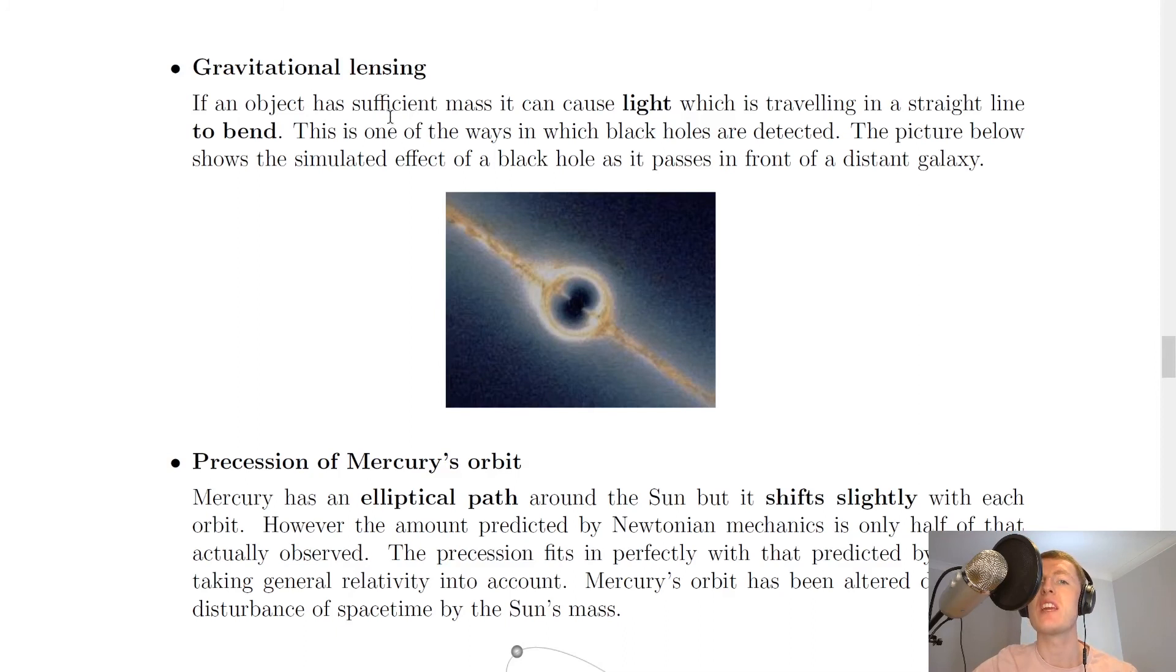The next one is gravitational lensing, and it says here that if an object has sufficient mass, it can cause light which is travelling in a straight line to bend. This is one of the ways in which black holes are detected. The picture below shows the simulated effect of a black hole as it passes in front of a distant galaxy. So you can see the light there which forms a sort of ring, and that is the light bending there.